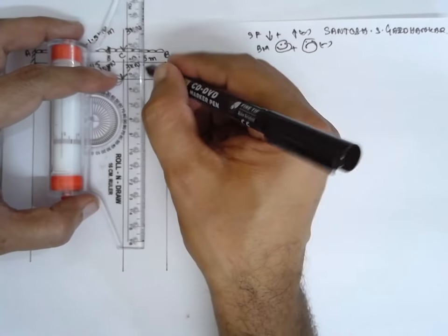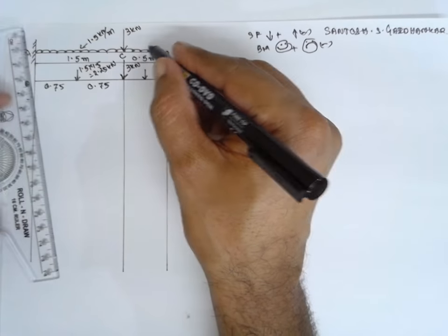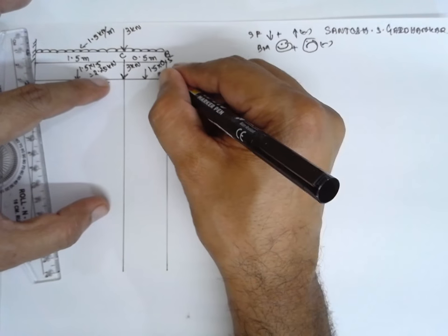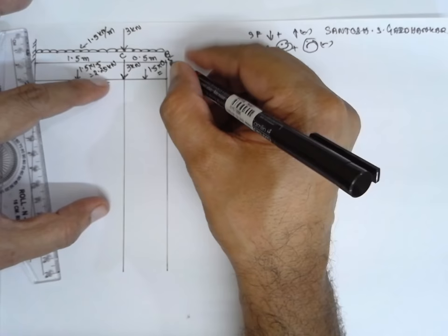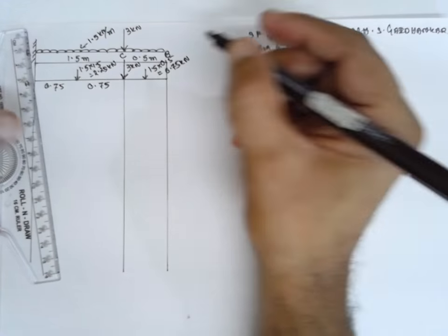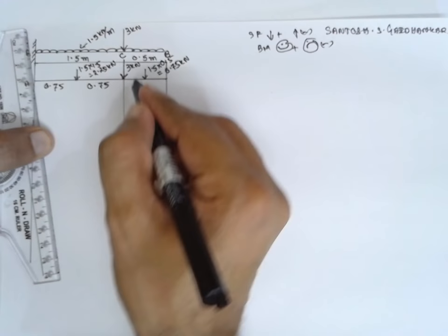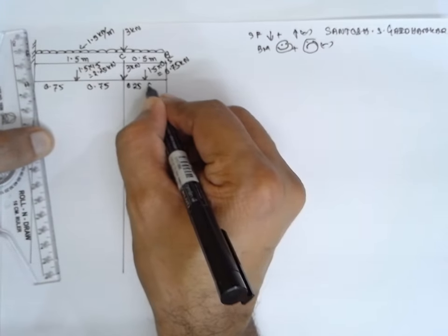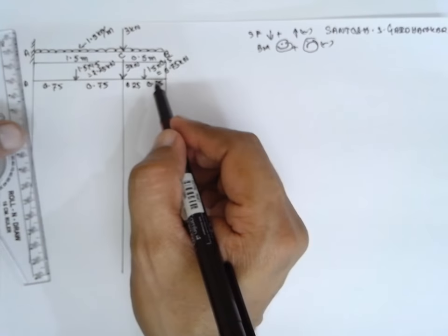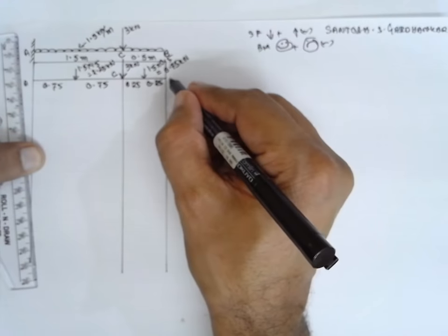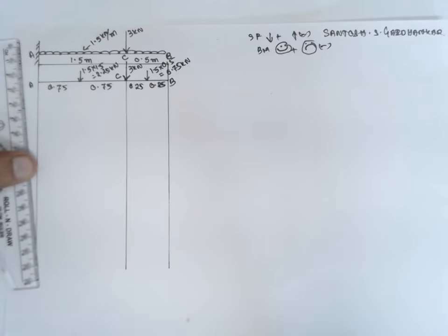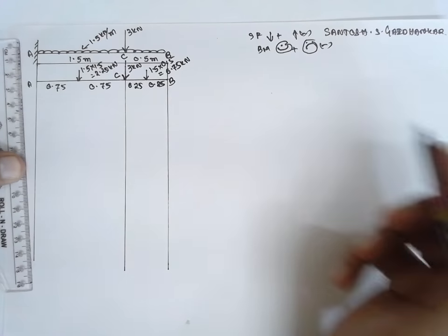The value is 1.5, 1.5 into 0.5. The answer for this one is 0.75 kilonewton and half of length, that is 0.25, 0.25. Either side you will get 0.25, 0.25. This is C and B and this is B. Now C and B.